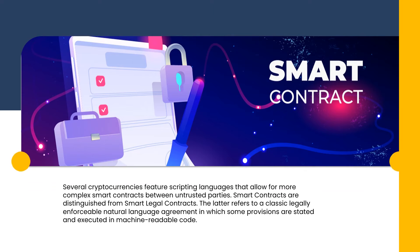Smart contracts are distinguished from smart legal contracts. The latter refers to a classic legally enforceable natural language agreement in which some provisions are stated and executed in machine-readable code.